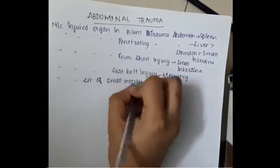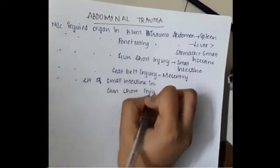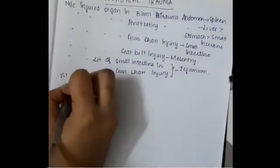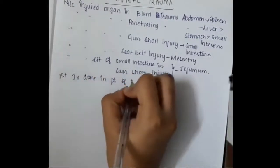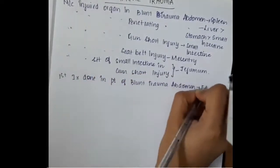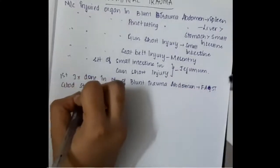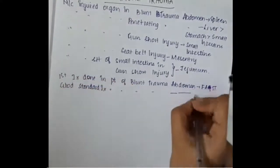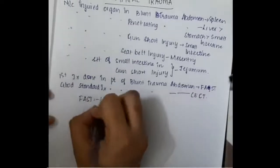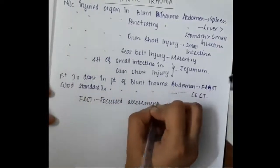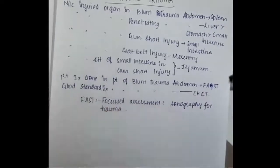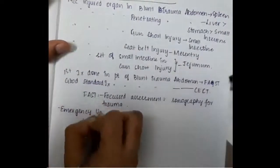Most commonly injured part of Small Intestine in Gunshot Injury is Jejunum. First investigation done in Blunt Trauma Abdomen is FAST. Gold standard investigation done in Blunt Trauma Abdomen is CECT. FAST is Focused Assessment with Ultrasonography for Trauma.